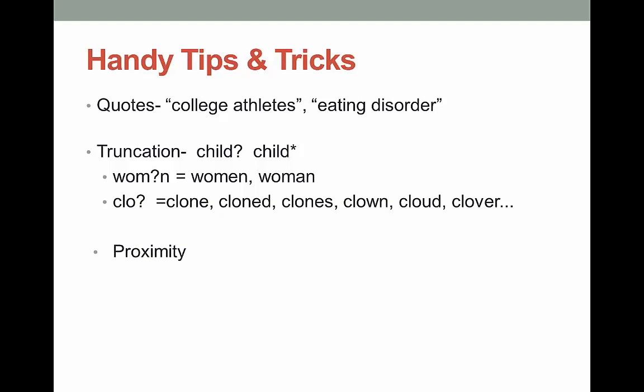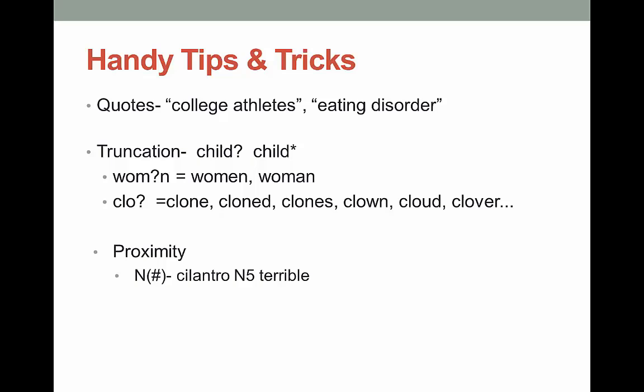Proximity helps you find words that are close together. Different databases have different ways to search this. EBSCO uses N with a number — the number indicates how far apart the words can be. In this case, I'm asking the database to find instances where cilantro and terrible are within five words of each other, regardless of order. This could be 'cilantro is the most terrible tasting herb ever' or 'many can't stand the terrible taste of cilantro.' Google also has a proximity search, using the word AROUND in all capitals with a number. Even I don't use proximity searching that much, but it is very handy when you need it.